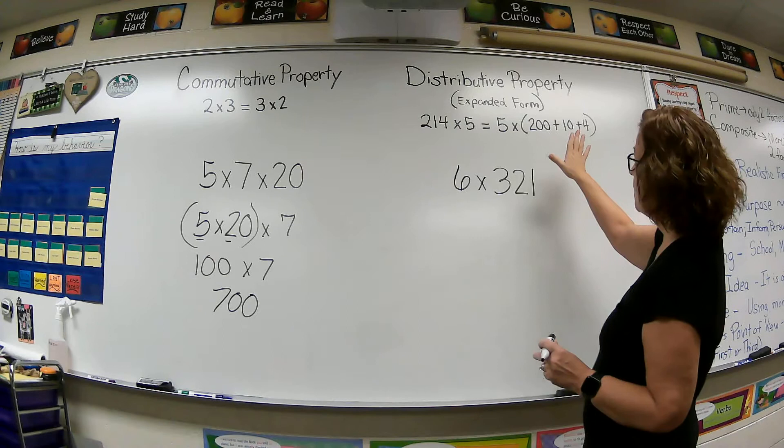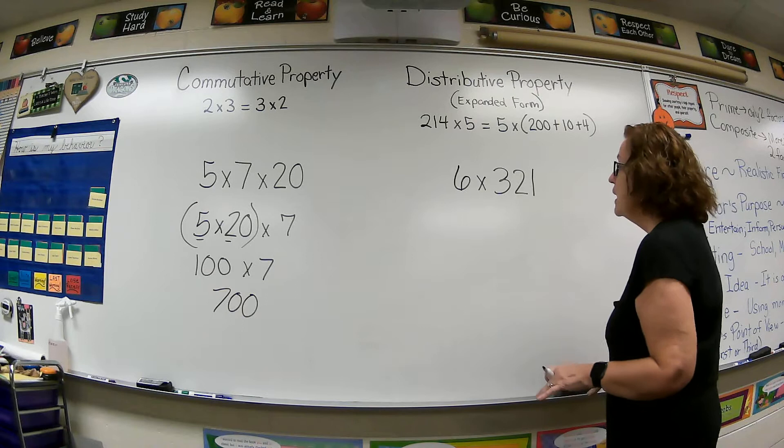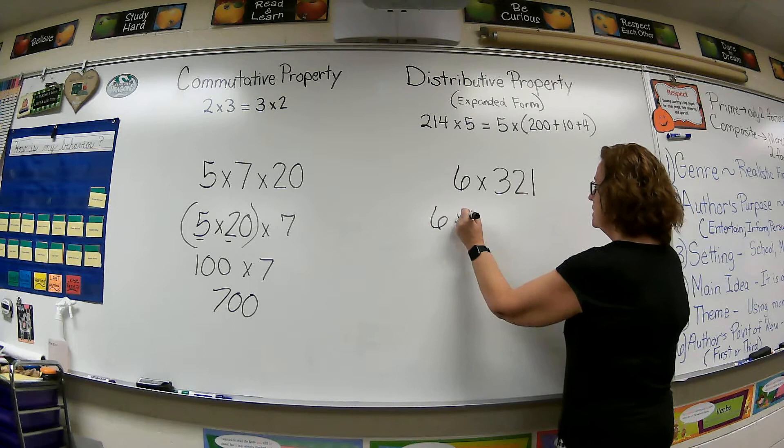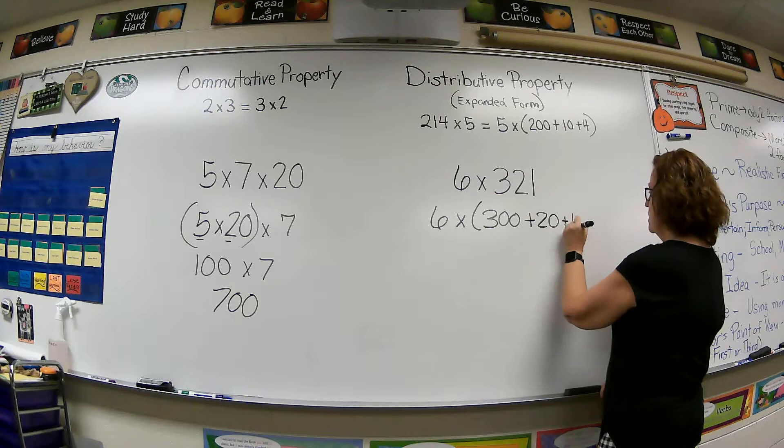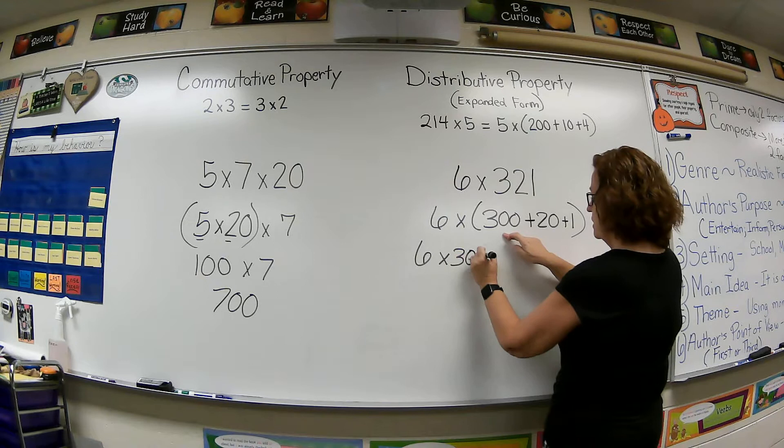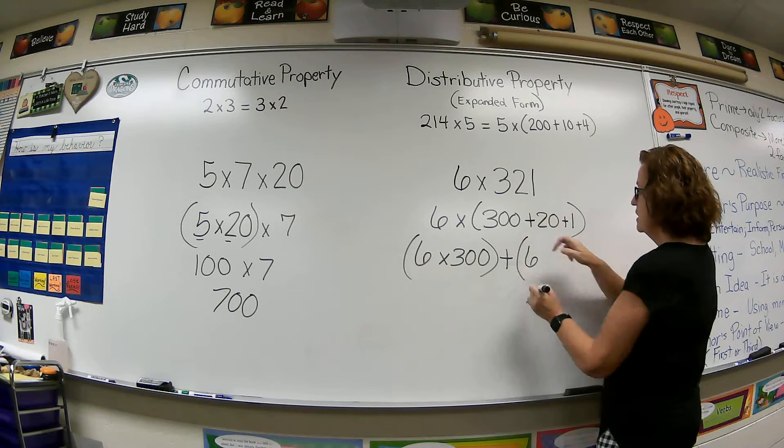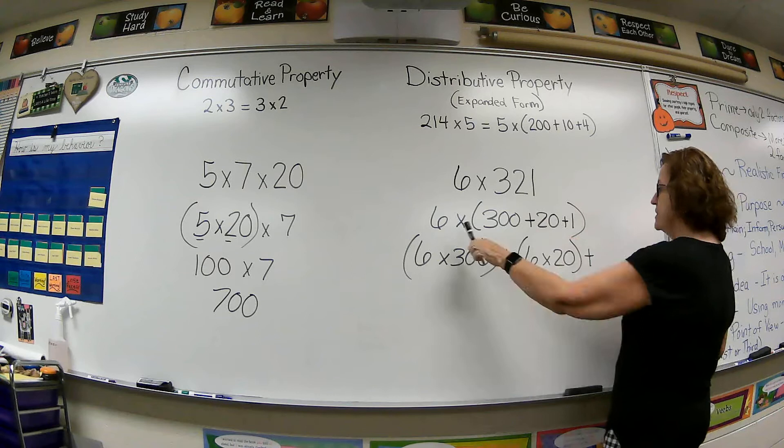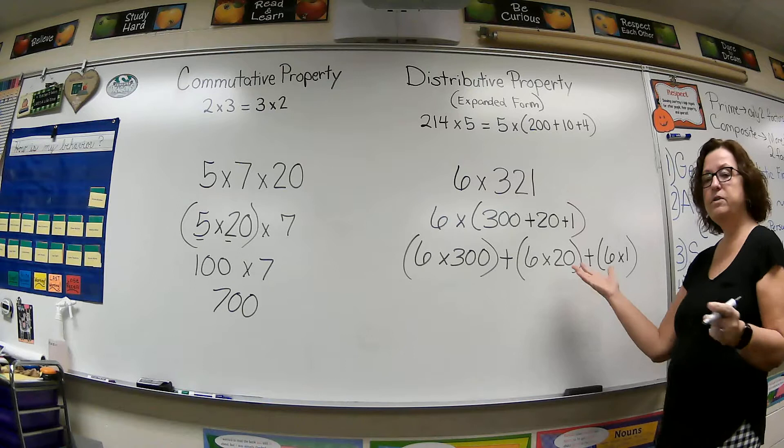Now we're gonna look at the distributive property. We've been working with this, so this should be very familiar to you. We're going to break apart our larger number and we're gonna say this is 6×(300+20+1). And then we go a little further and we'll say 6×300 plus 6×20 plus 6×1.